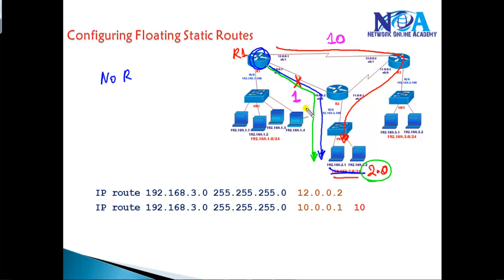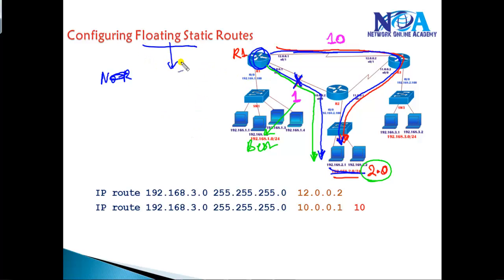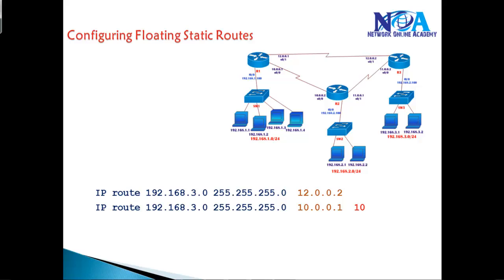Router 1 will forward traffic via the primary route because it has a lower administrative distance. If that route fails, the routing table will automatically be installed with the second route, and Router 1 will still forward traffic via Router 3 and then reach Router 2's resources. This concept is called floating static routes — we can have multiple static routes for the same destination using different administrative distance values. Let's implement this in our scenario.